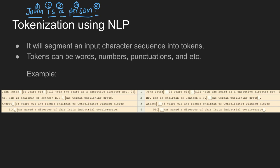Let's take an example sentence: 'John Peter, 24 years old... will join the board as executive director November 29. Mr. Sam is chairman of Johnson NV, the German publishing club. Andrew, 45 years old, and former chairman of Consolidated Time and Fields PLC, was named as a director of this Indian Industrial Institute.' This is the actual original sentence, and this is what we have to work with for tokenization.